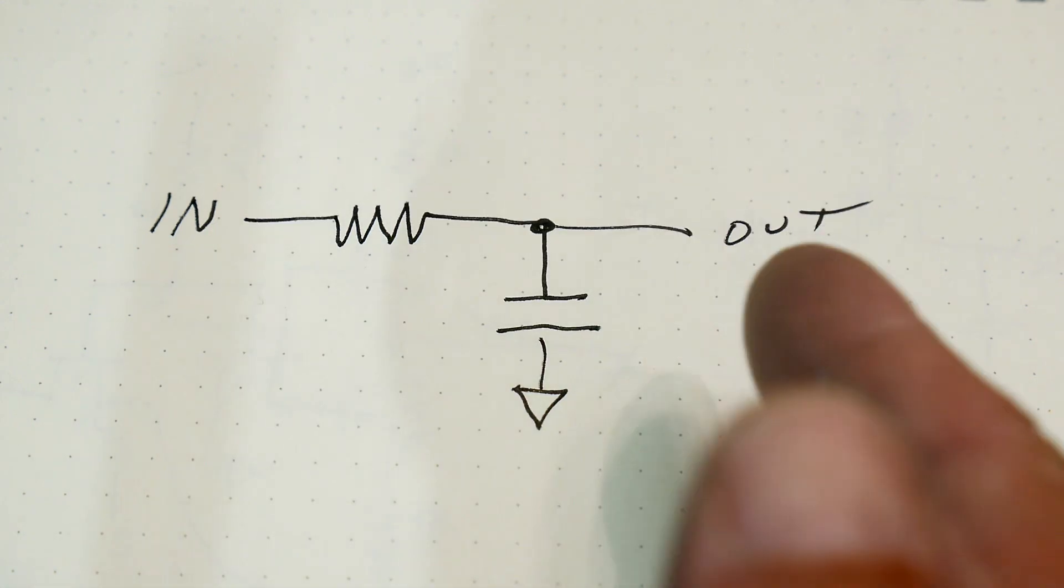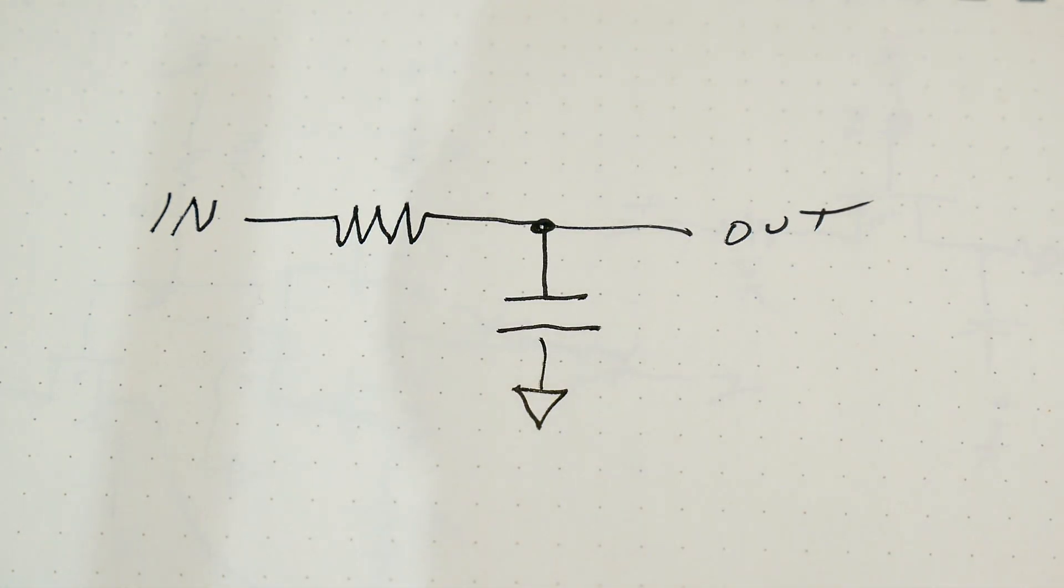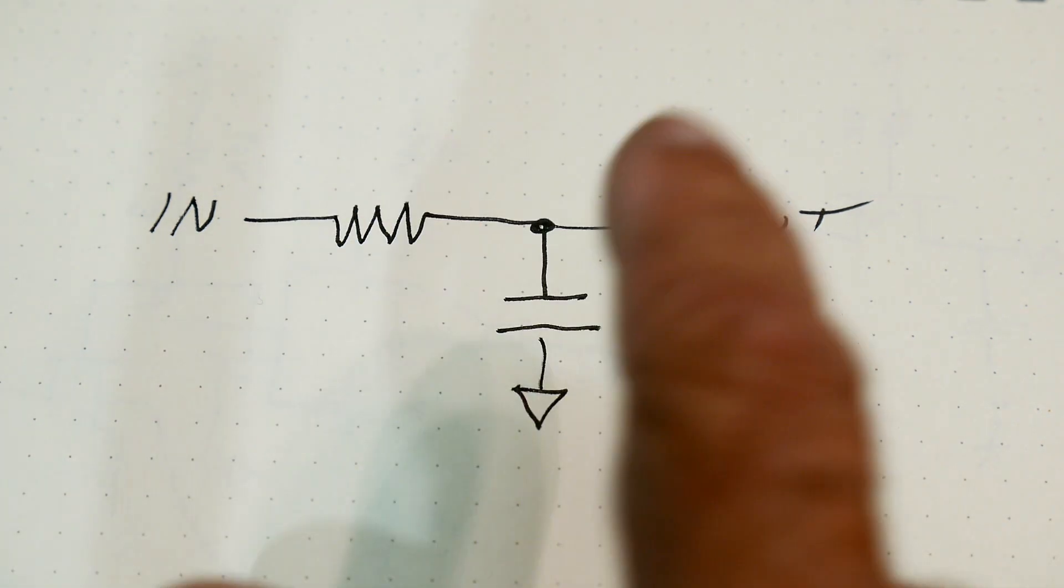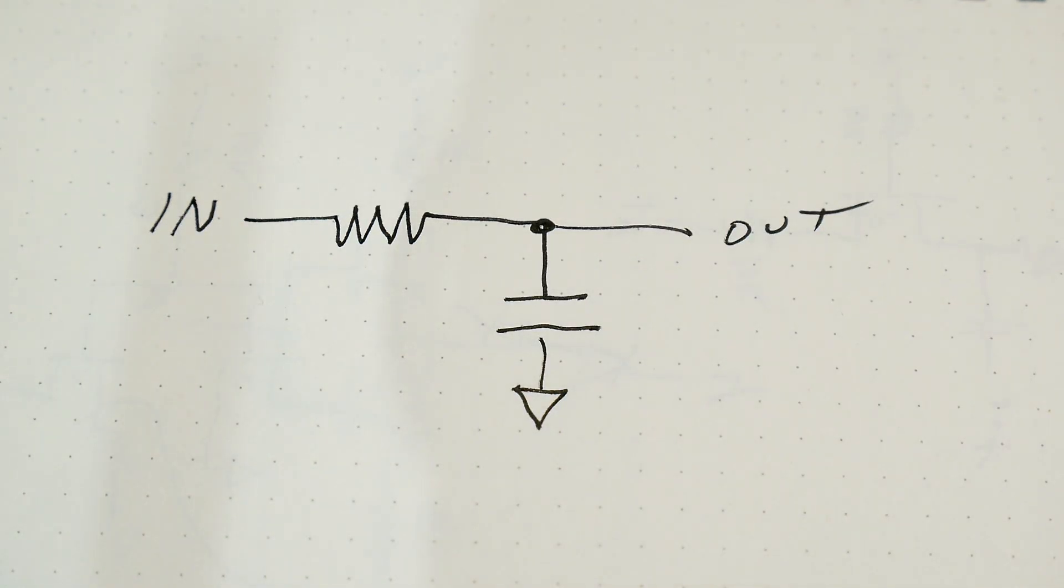We're just going to look at a really simple circuit with an in and out. You could call this an RC circuit, you could call this a low-pass filter. In our situation, it's just going to be two components, and we're going to look at the input and the output on an oscilloscope.